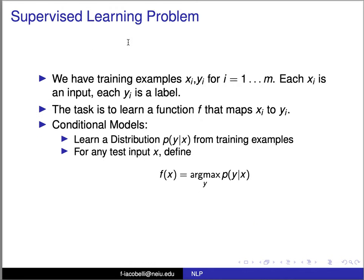It's a supervised learning problem. We will have training examples — words and tags — a sequence of words with its corresponding sequence of tags. The task will be to learn the function that maps sequences of words to a sequence of tags. What we're going to do is learn a distribution probability for those tags given those words from these training examples.